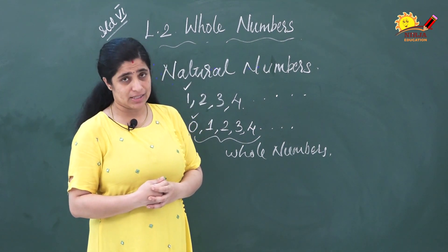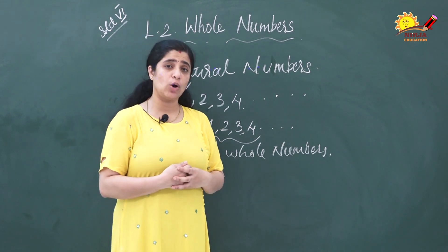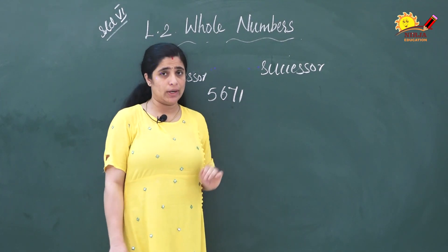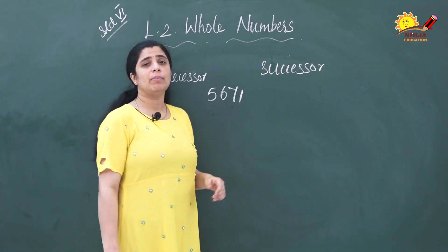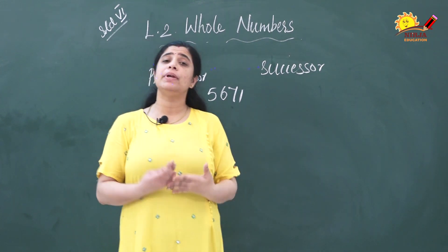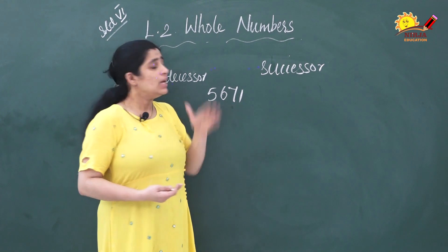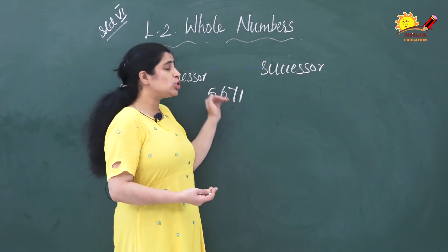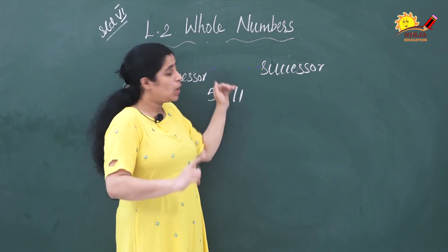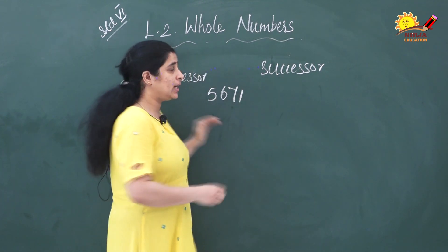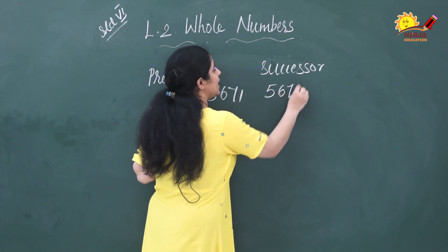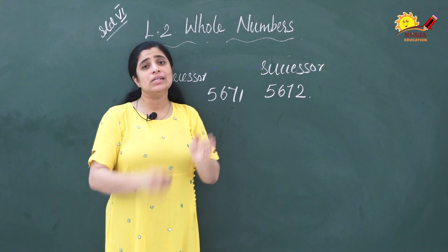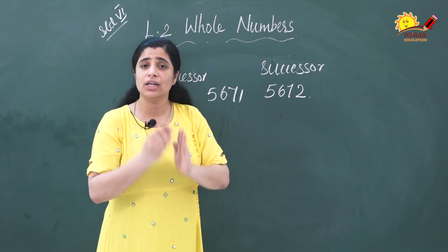Now successor and predecessor. What are the successor and predecessor of a number? Let's take 5671 as a whole number. You have to find the successor and predecessor of this number. Successor means the number that comes just after this number — that means you add 1 to this number. 5671 + 1 = 5672. So 5672 is the successor of 5671.